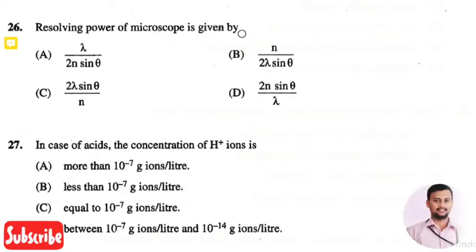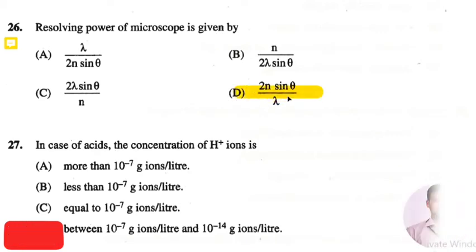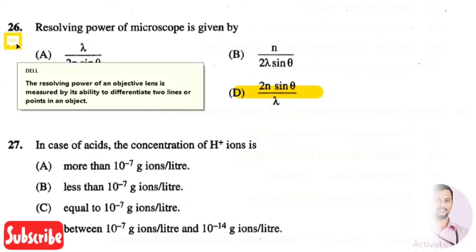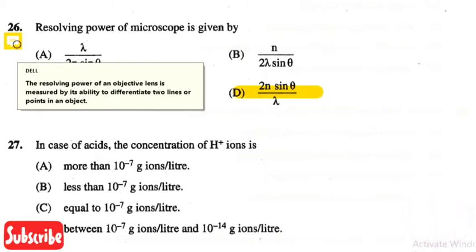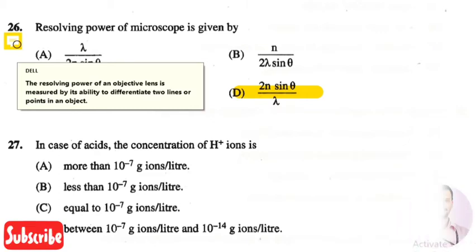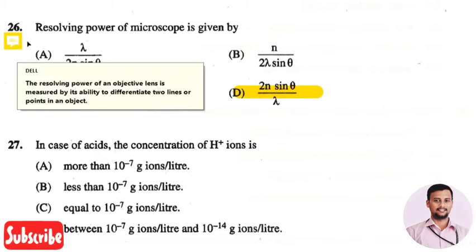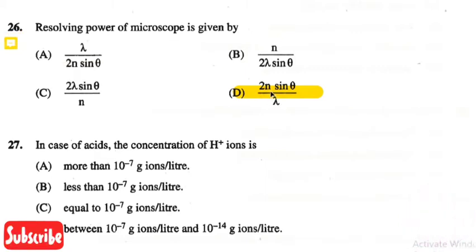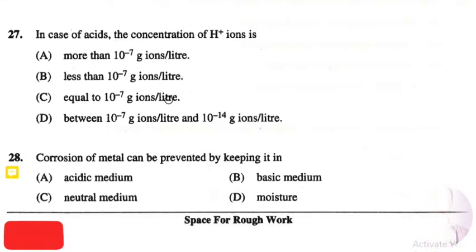The next question is: resolving power of a microscope is given by — the right answer is option four: 2n sinθ / λ. Resolving power of a lens is measured by its ability to differentiate two lines or two points on an object, and it is given by the equation 2n sinθ divided by λ.